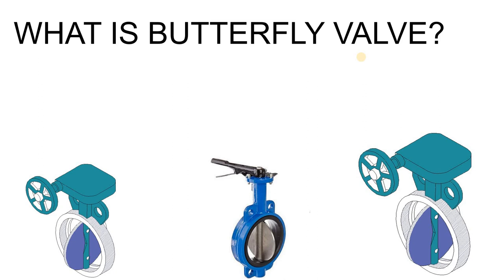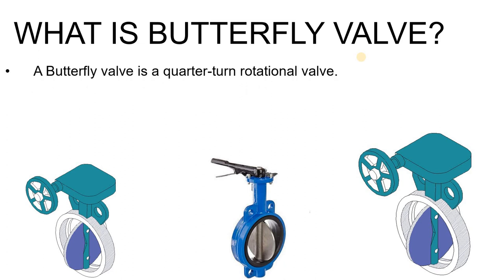A butterfly valve is a quarter-turn rotational valve, meaning it simply opens and closes in 90 degrees. Now if you see the P&ID symbol of the butterfly valve, it will look something like this, and there will be one dotted line here.